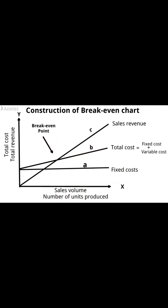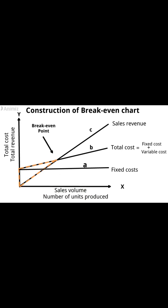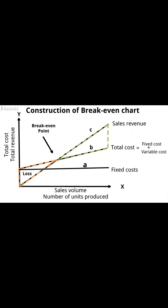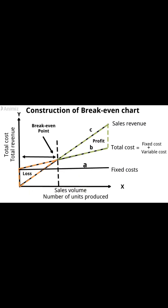This point is called the breakeven point. The breakeven point represents a no profit and no loss situation for a given volume of production. The area between the total cost line and total sales revenue line on the left side of the breakeven point marks a loss to the concern. The area between the same lines on the right side of the breakeven point represents profit. Profit comes only when more than this volume of output is reached, and profit increases at a faster rate than the increase of total costs.